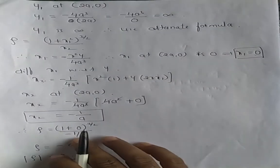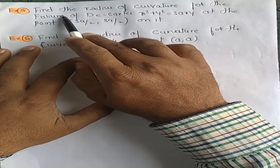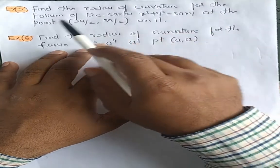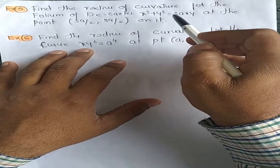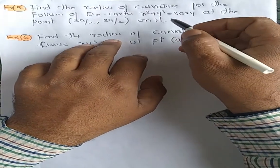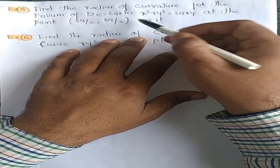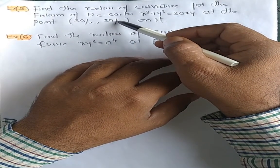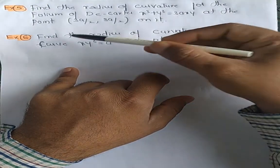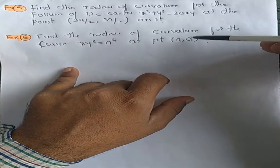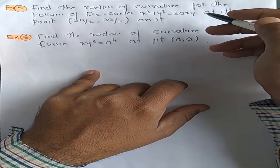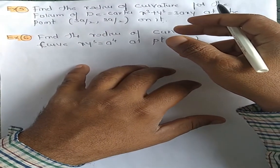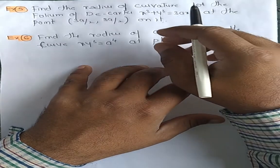For homework: find the radius of curvature for the folium of Descartes x³ + y³ = 3axy at the point (3a/2, 3a/2). Also find the radius of curvature for the curve xy³ = a⁴ at the point (x, y). Follow the previous four examples — find y₁, then y₂, then substitute into the radius of curvature formula. Send your solutions as an image, photo, or PDF for checking.